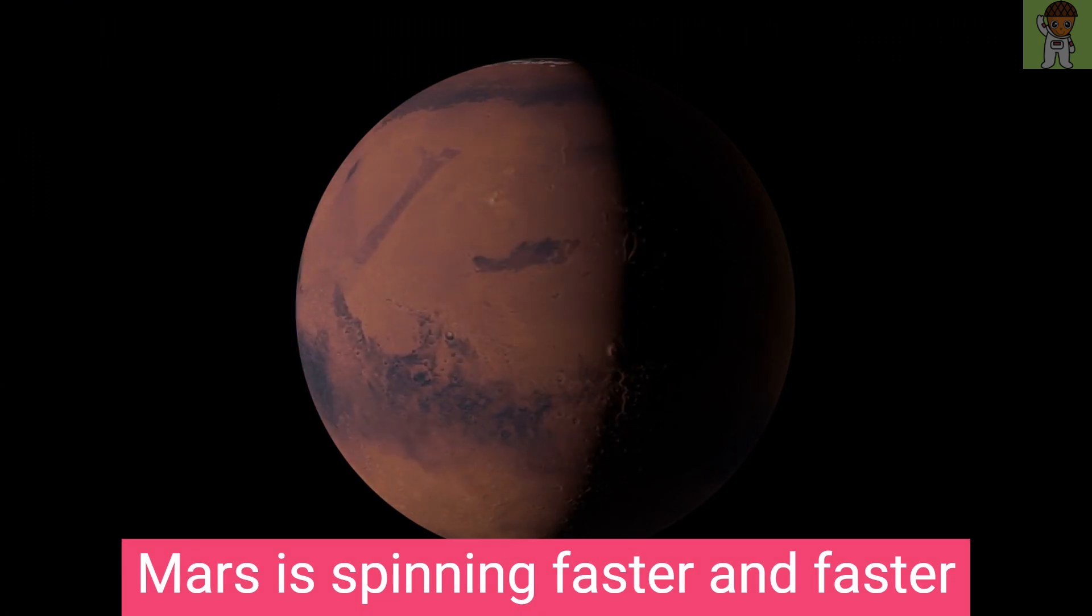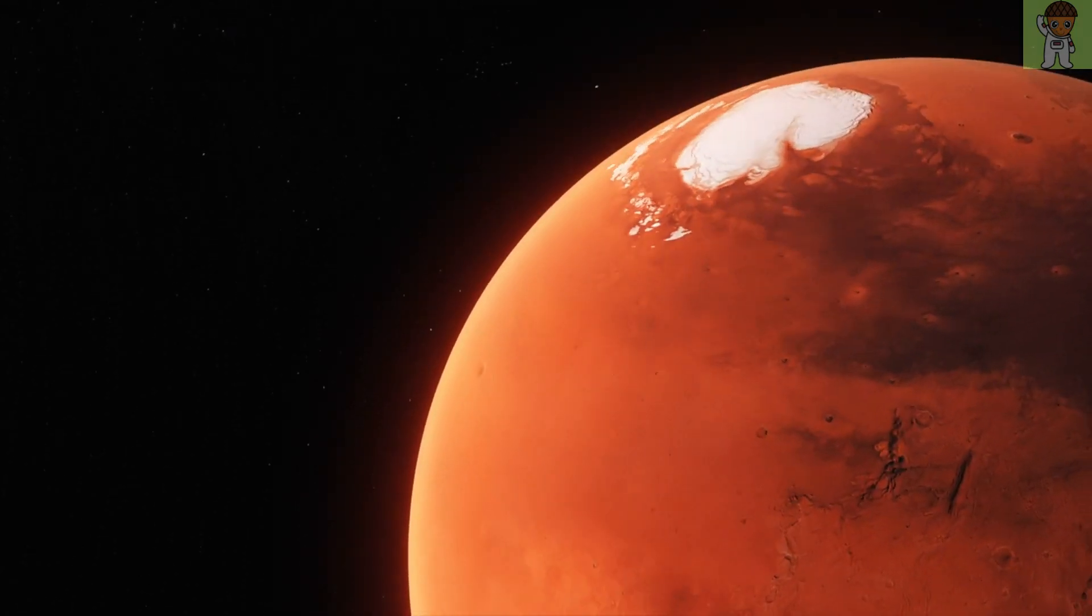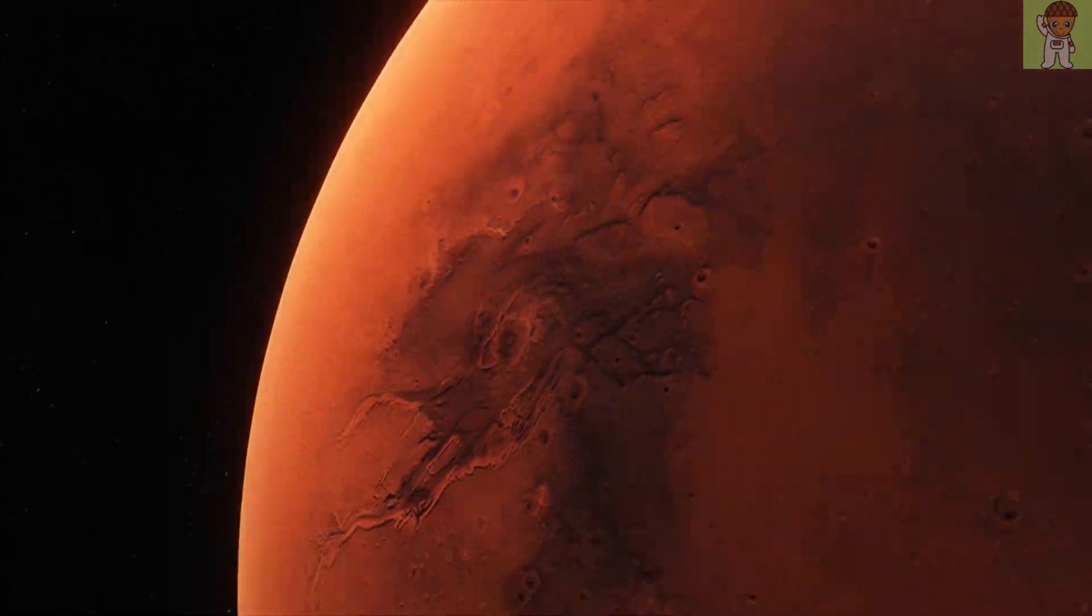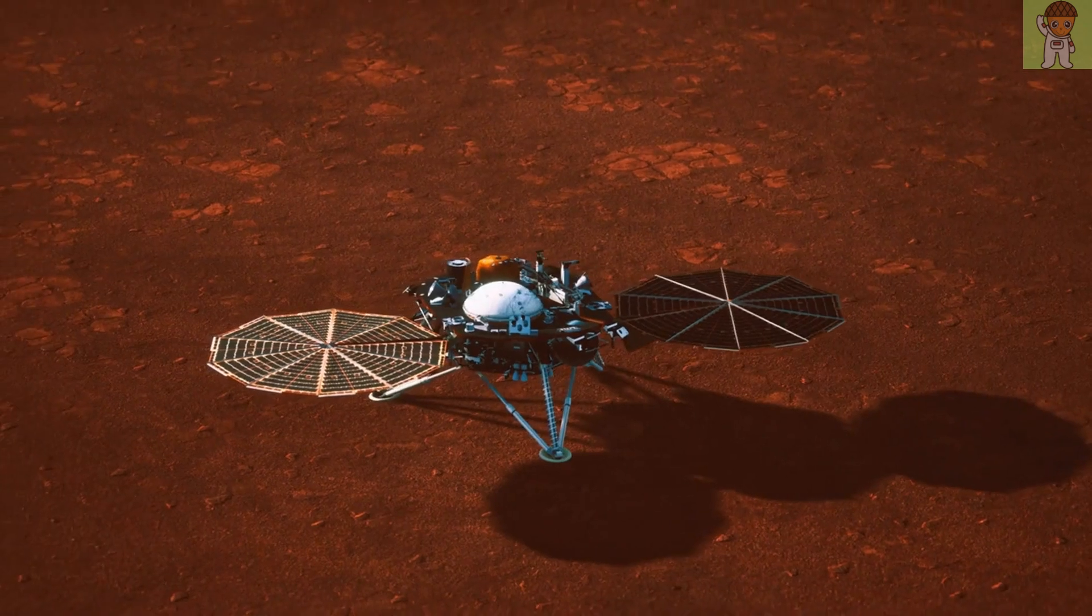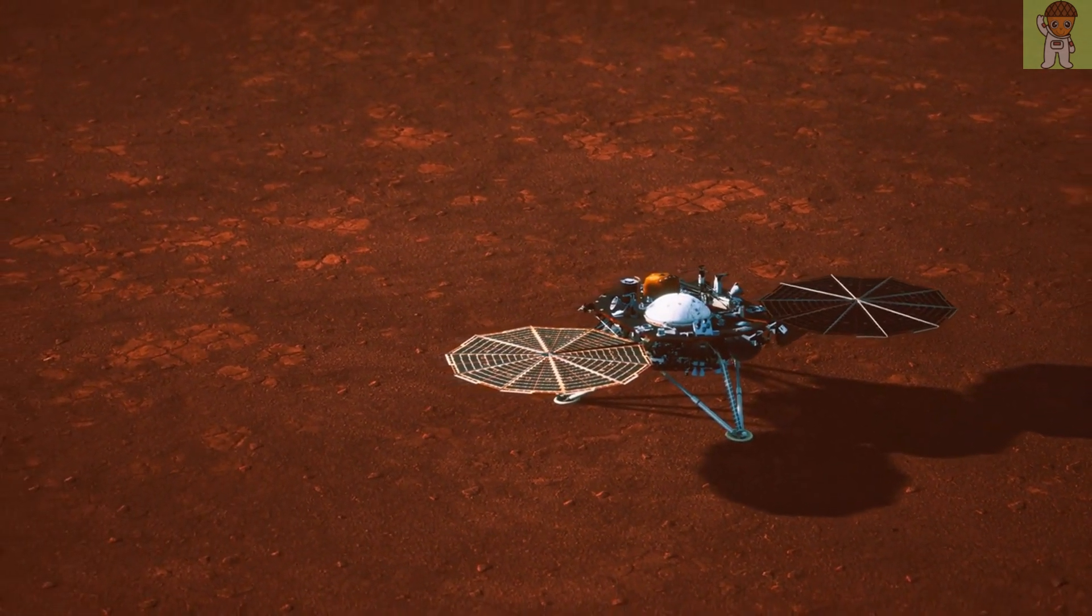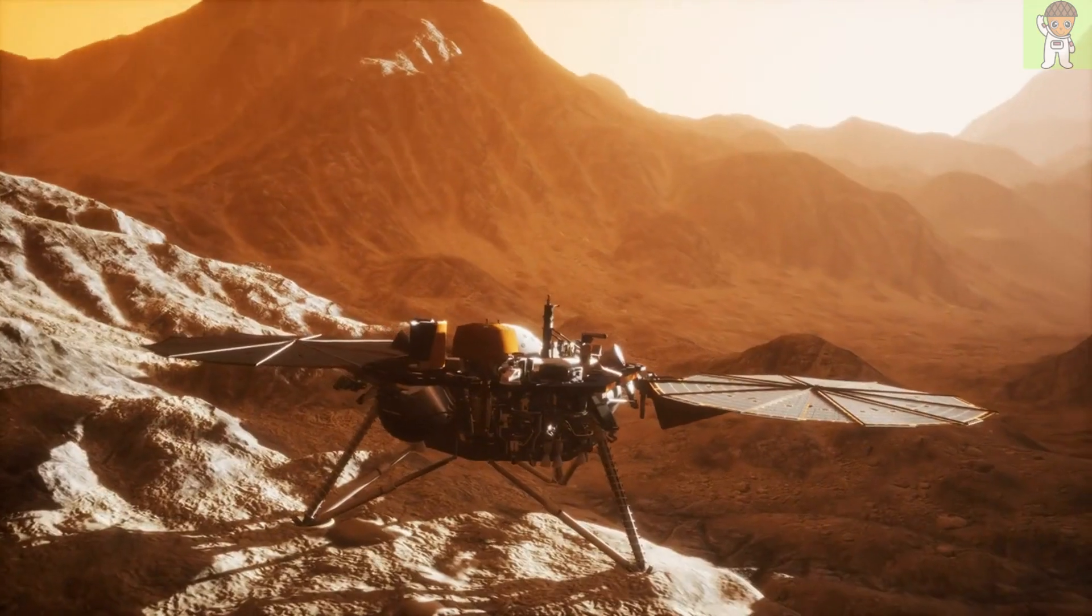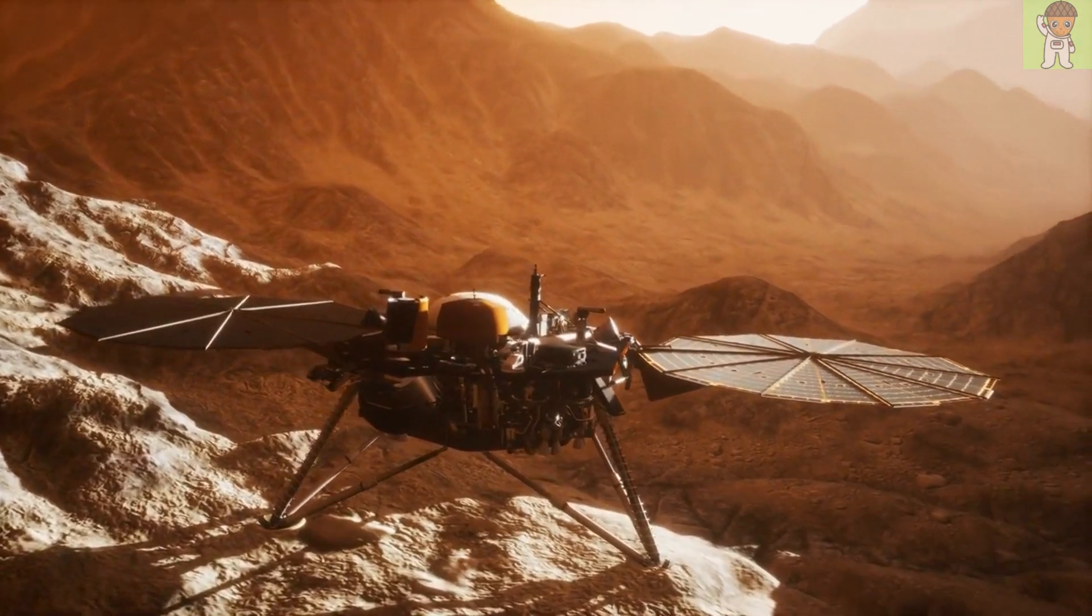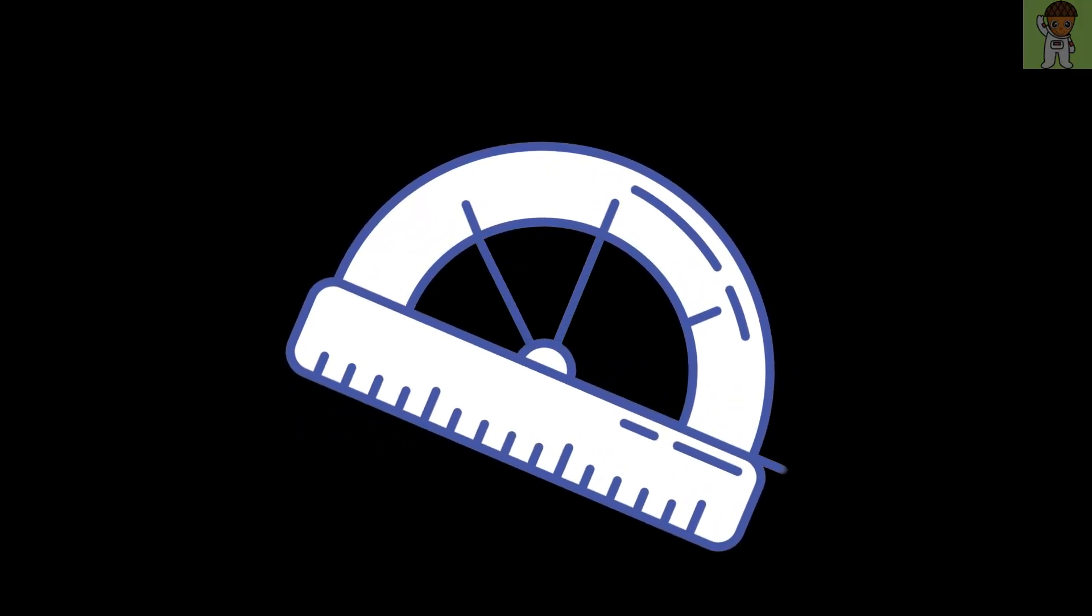Mars is spinning faster and faster. One of the biggest stories to come from Mars is that the red planet's spin has been getting quicker every year, and scientists don't know why. Data from NASA's InSight mission shows that Mars's rotation is accelerating at a rate of four milliarcseconds per year, which means its days are growing slightly shorter. A milliarcsecond is one one-thousandth of an arcsecond, which is a unit of angularity.